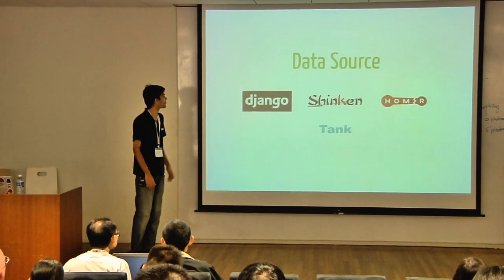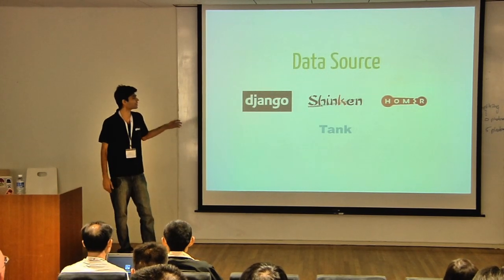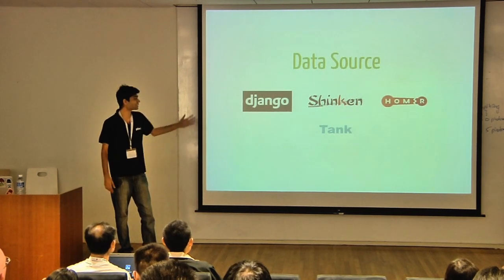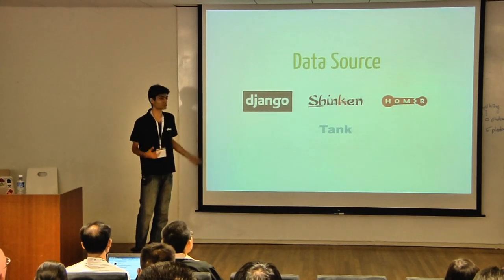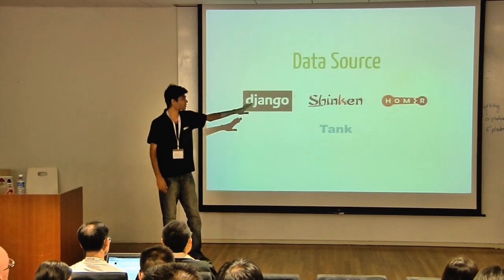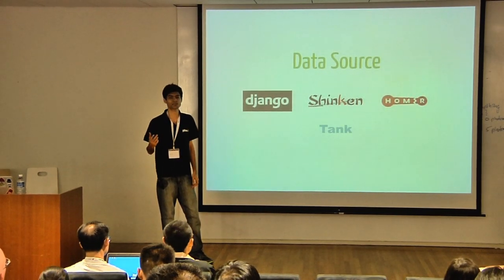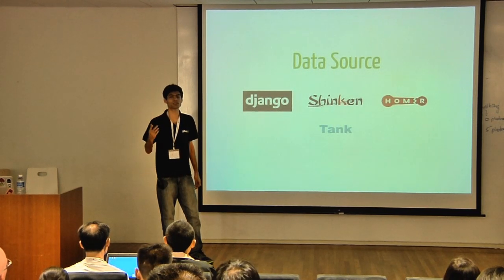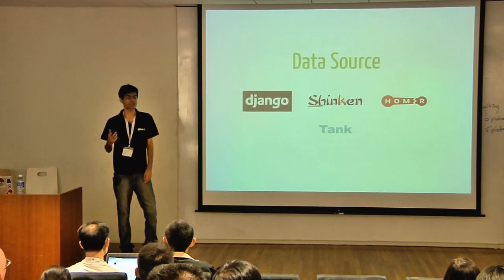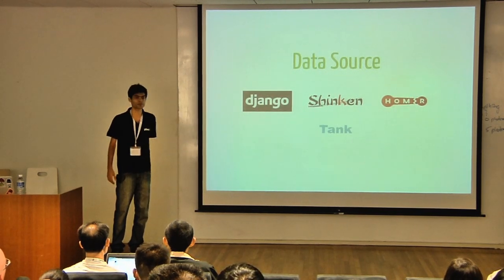In Django we have data like account credits, calls, creating an application, creating an endpoint on PLEVO. Shinkin is a monitoring tool which gives us data about servers — CPU load, memory. Homer is an awesome SIP trace tool which gives us traces about SIP invites; SIP is a telephony protocol which gives us invites, registers, cancel notifications. And Tank is the internal monitoring tool which also has a lot of data input.